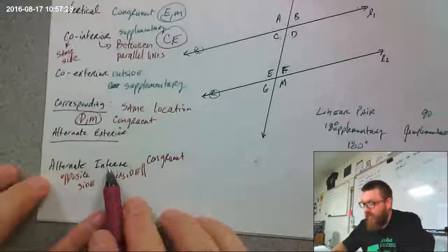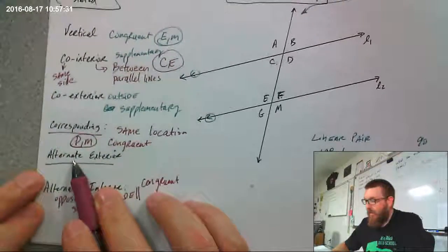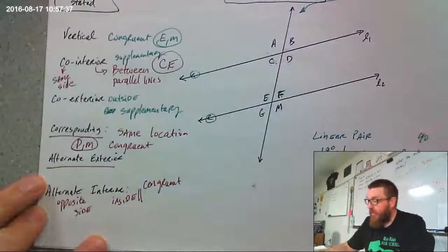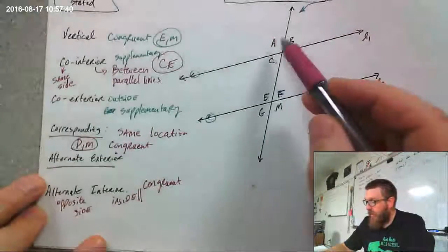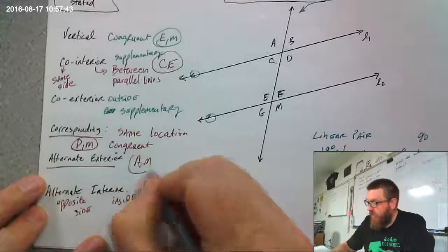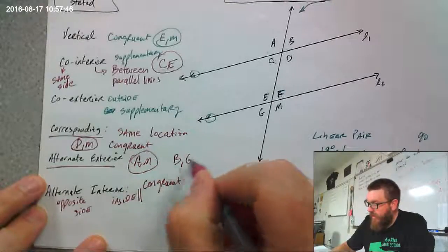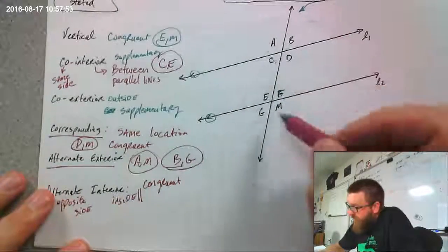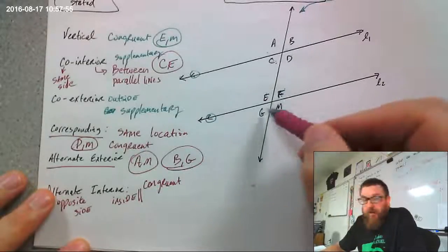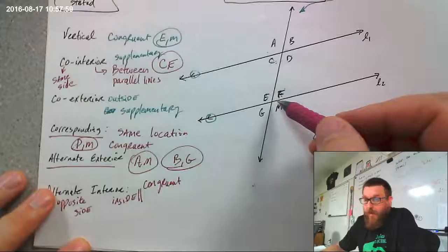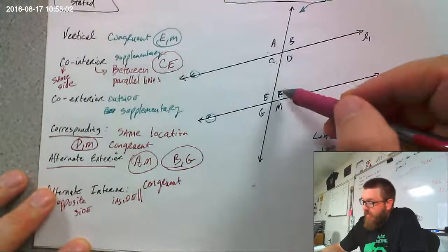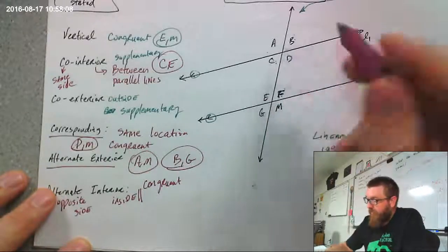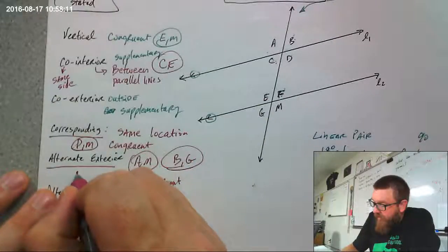Alternate exterior — just like alternate interior, the "alternate" means on opposite sides of the transversal, so one on the left and one on the right. Exterior means the outside of the parallel lines. So A and M would be one example, and B and G would be another — those are alternate exterior angles. G and F are vertical so they're the same measurement; F and B are corresponding so they're the same angle. So if G equals F and F equals B, then G equals B. Alternate exterior angles are congruent.